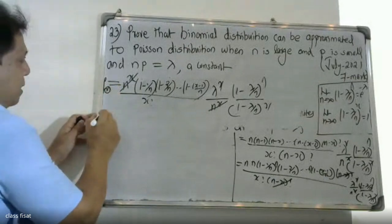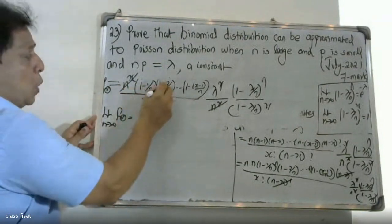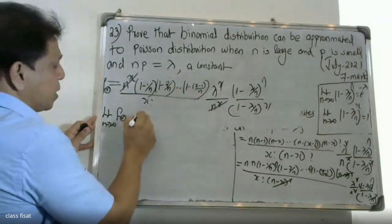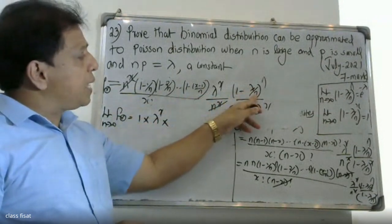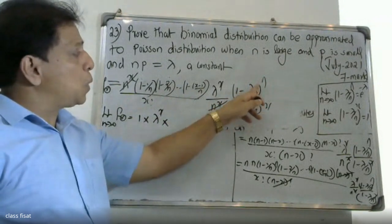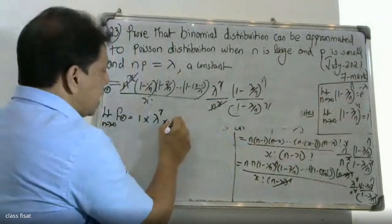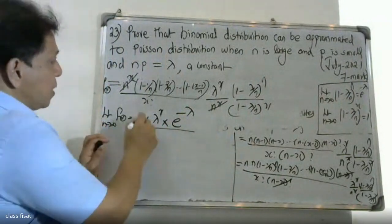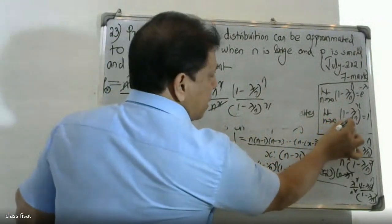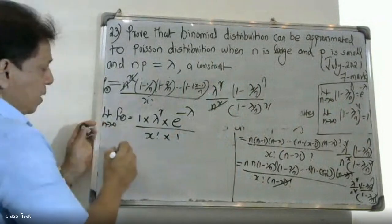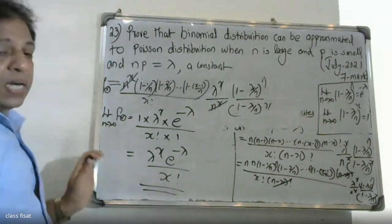Taking the limit as n tends to infinity, f of x equals the limit as n tends to infinity. When n is infinity, 1 by n is 0, so all terms like 1 minus 1 by n, 1 minus 2 by n tend to 1. The limit of 1 minus lambda by n raise to n tends to e raise to minus lambda. Therefore f of x equals lambda raise to x times e raise to minus lambda divided by x factorial.